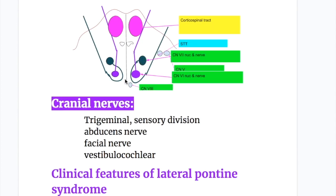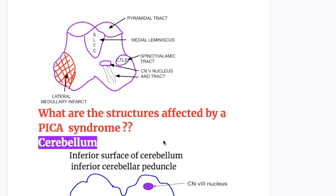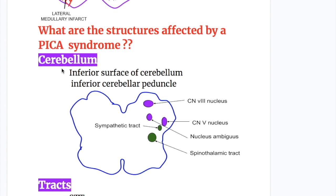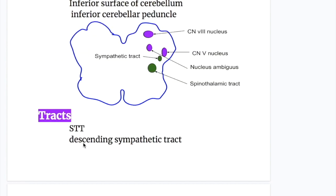Four cranial nerves arise from the pons are affected: trigeminal, abducens, facial, and vestibulocochlear nerve. What structures are affected by posterior inferior cerebellar artery syndrome? One brain structure: the inferior surface of the cerebellum and inferior cerebellar peduncle. Two tracts: the spinothalamic tract and the descending sympathetic tract. Three cranial nerves: cranial nerve five — trigeminal, cranial nerve eight — vestibular nerve, and the nucleus ambiguus, which contains cranial nerves nine — glossopharyngeal — tenth vagus, and eleventh accessory.